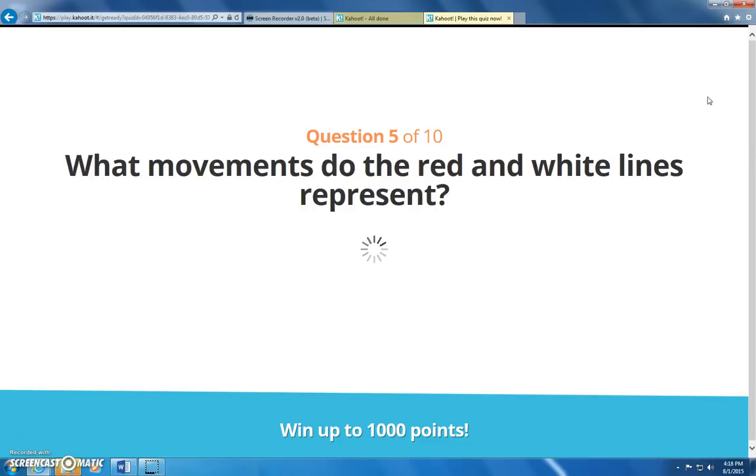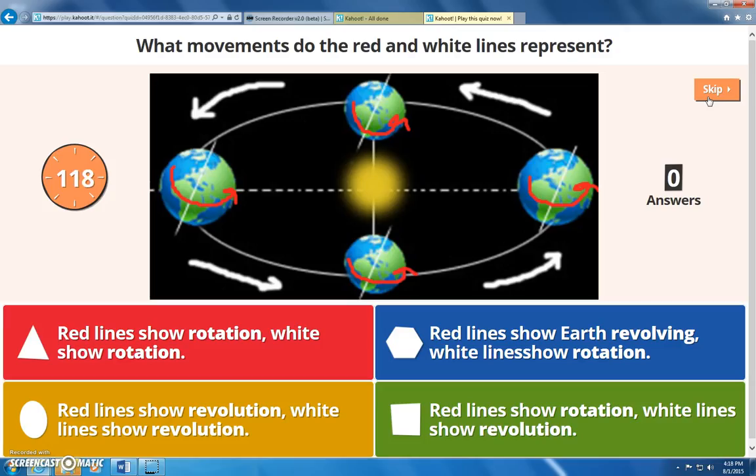Coming to conclusion on our review, what movements do the red and white lines represent? Red lines show rotation and white lines show rotation. Red lines show revolution whereas the white lines show revolution. And last, the red lines show rotation and the white lines show revolution.